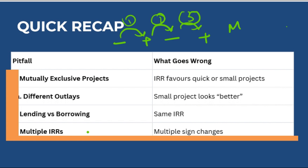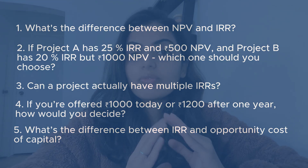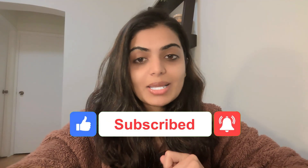There is a way to deal with IRR's issues: Modified IRR, known as MIRR. MIRR fixes the reinvestment rate assumption and always gives one clear, realistic return. If you'd like a dedicated video on MIRR, comment 'MIRR' below — I've also attached a short write-up in the description. Now you can confidently answer all the questions we started with. Drop your answers in the comments, try all five questions or at least two, and if you found this helpful, like, share, and subscribe.